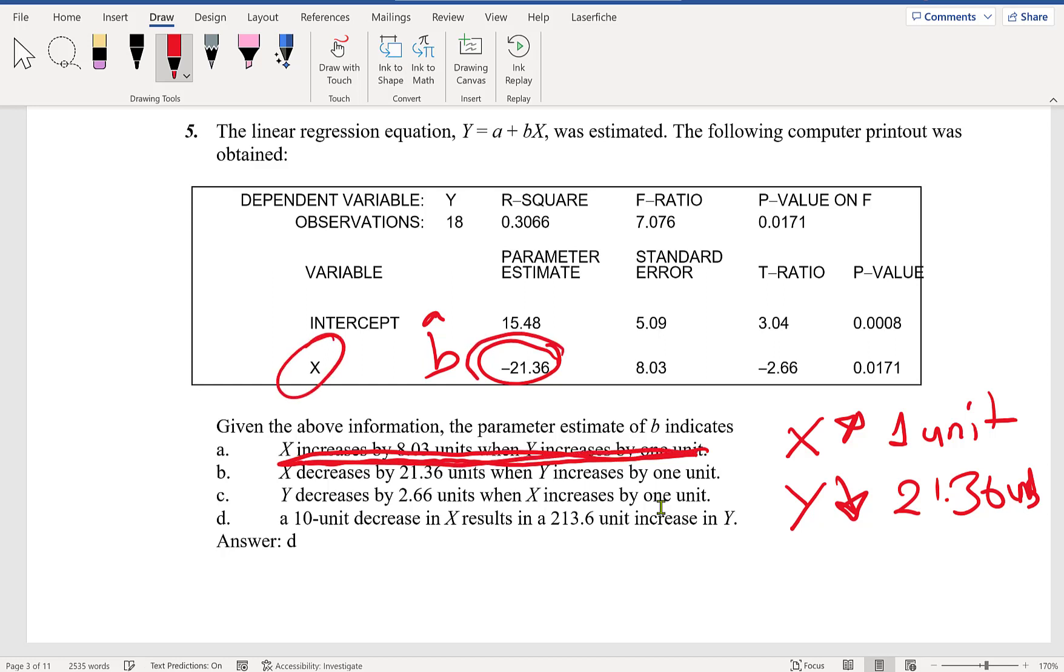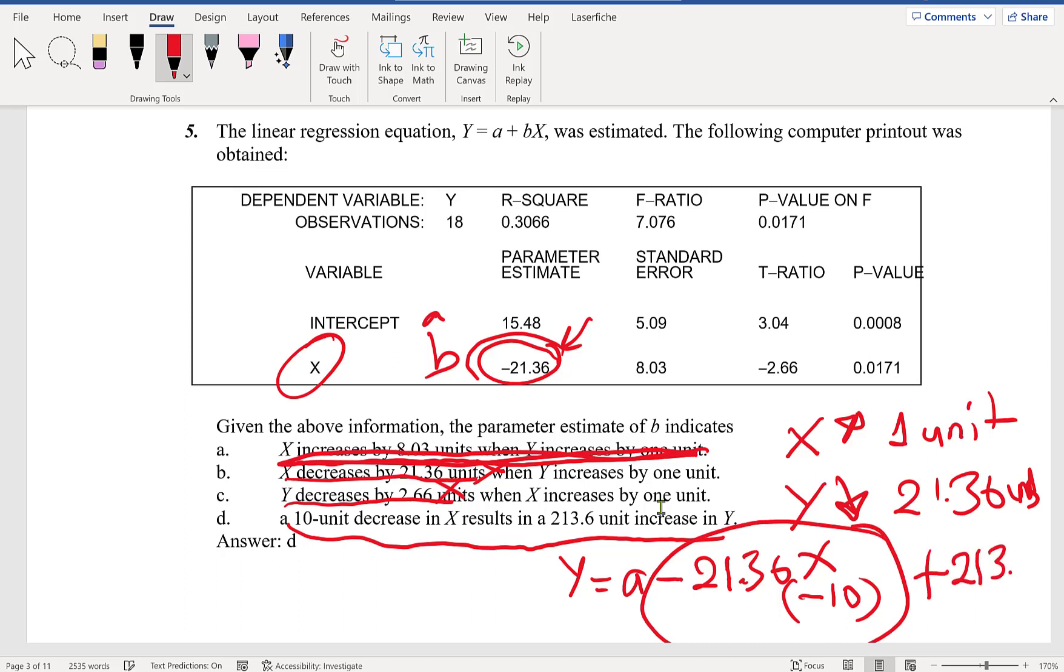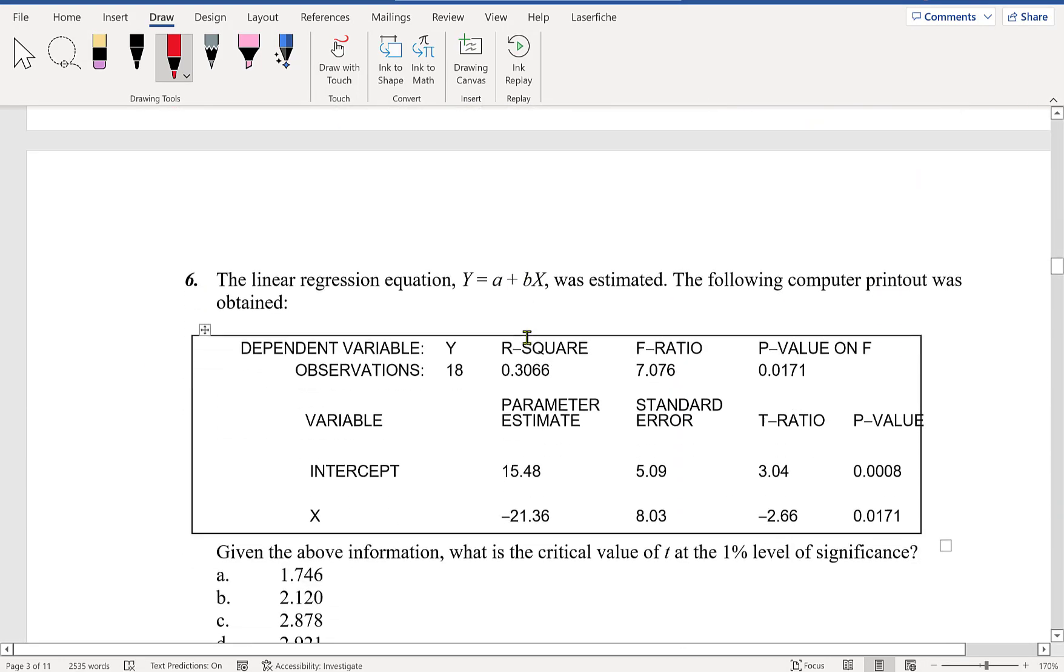If X decreases by ten units, it's going to be Y = a - 21.36X. If X decreases by ten, plug in negative ten here. This becomes positive 213.6. So if X decreases by ten units, Y will increase by 213.6 units. The correct answer is D.